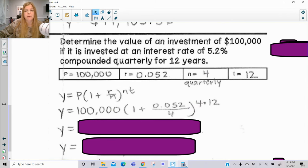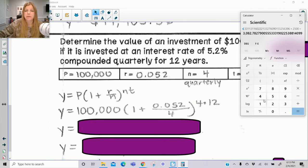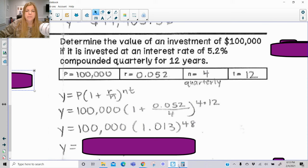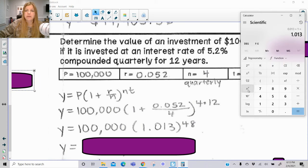So my rate divided by 4 to the 4 times 12 power, and it's just a coincidence that the previous problem had the same exponent that we're going to end up getting here. 0.052 divided by 4 plus 1. So I have 1.013. And now, fresh in my calculator, let's raise that to the 48th power, and then multiply it by 100,000. And that's our answer, $185,888.87.